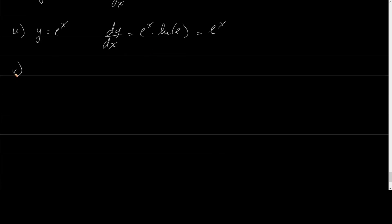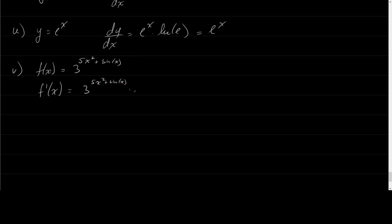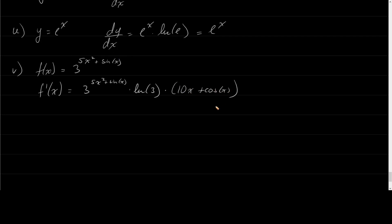Let's say f of x equals 3 to the 5x squared plus sine of x. f prime of x: the derivative of the outside — 3 to the 5x squared plus sine x times ln of 3. Times the derivative of the inside, which is the exponent 5x squared plus sine x. The derivative of that is 10x plus cosine x.